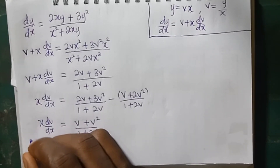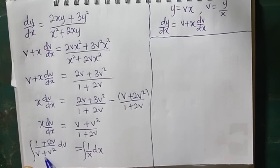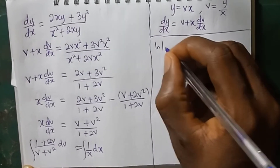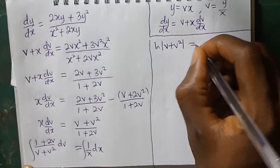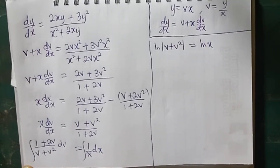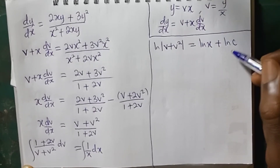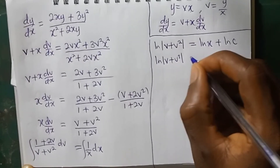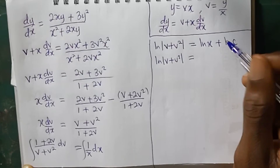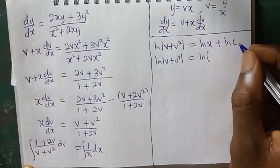Next, we are going to take the integral of each side. If you look at the numerator, it is exactly the same as the derivative of the denominator. Therefore, if we integrate this side, we obtain the natural log of the absolute value of v plus v squared. On the right-hand side, we have the natural log of x plus the constant of integration, which we can also write in log form, since the natural log of a constant is still a constant.